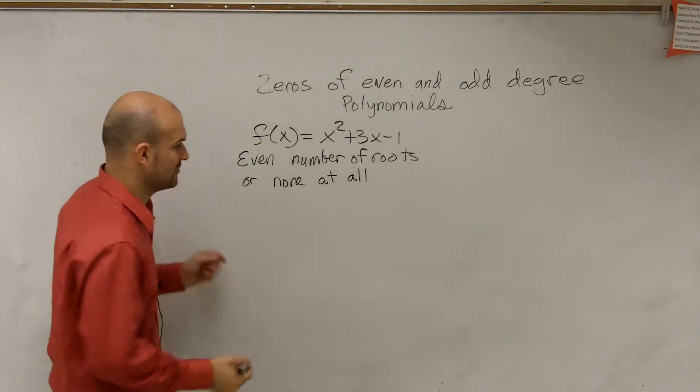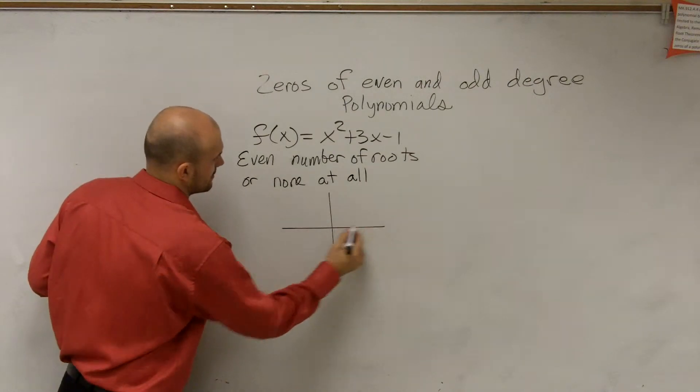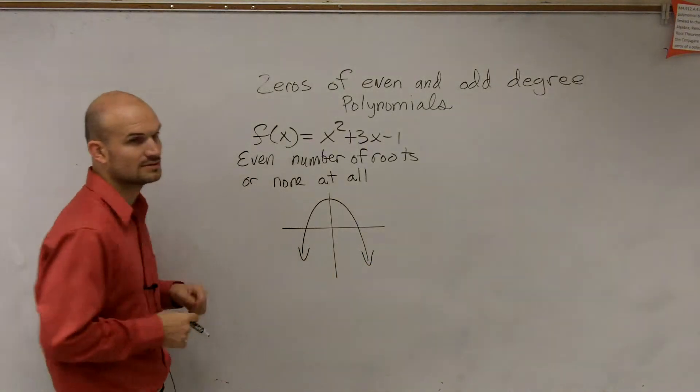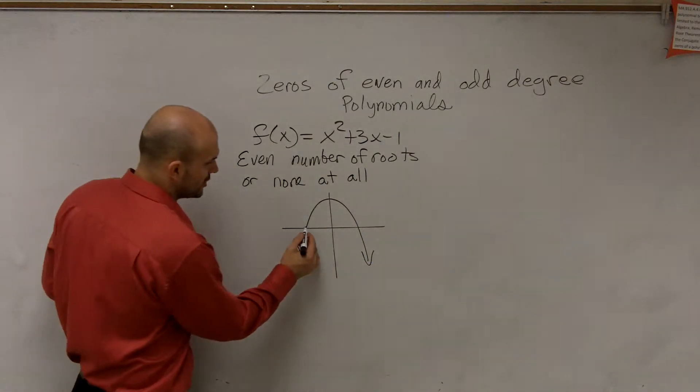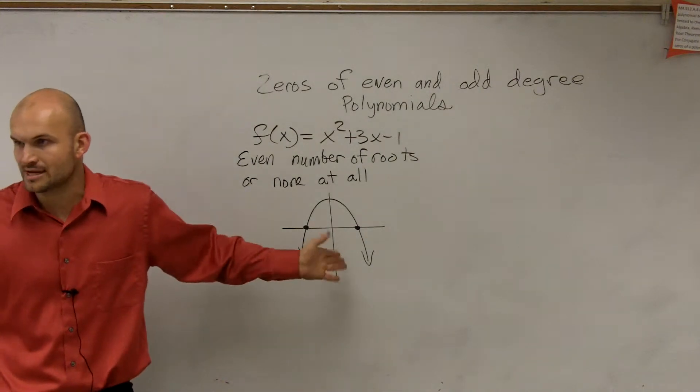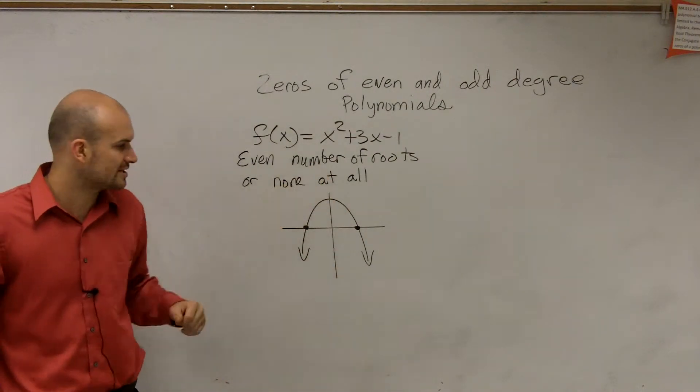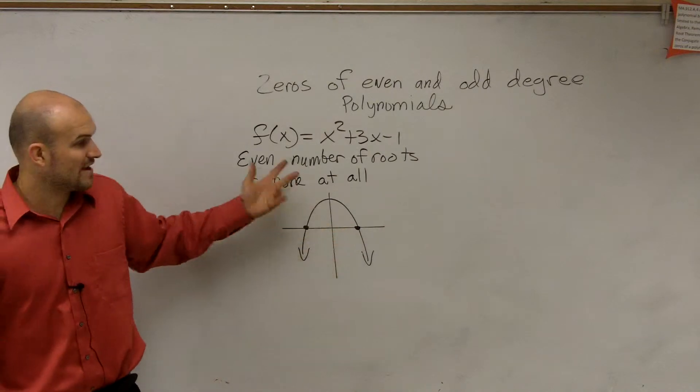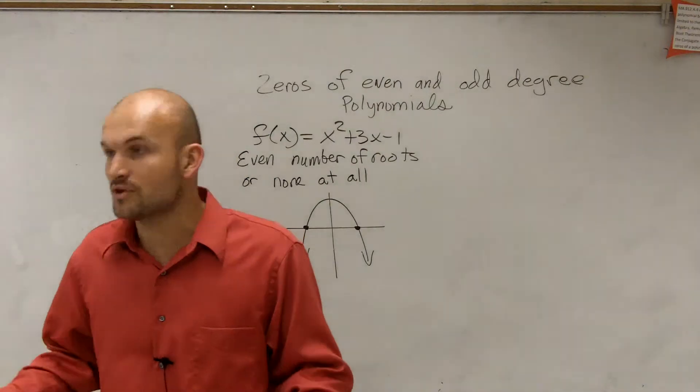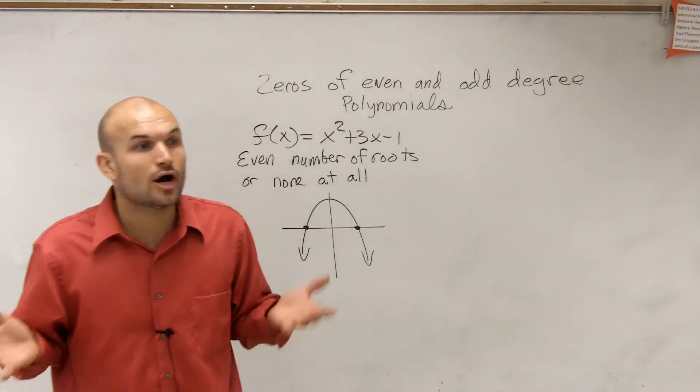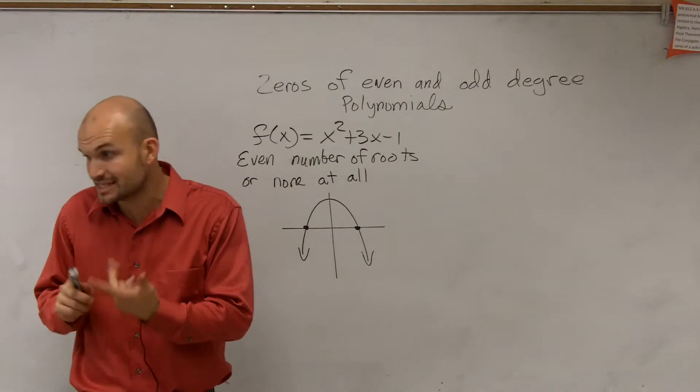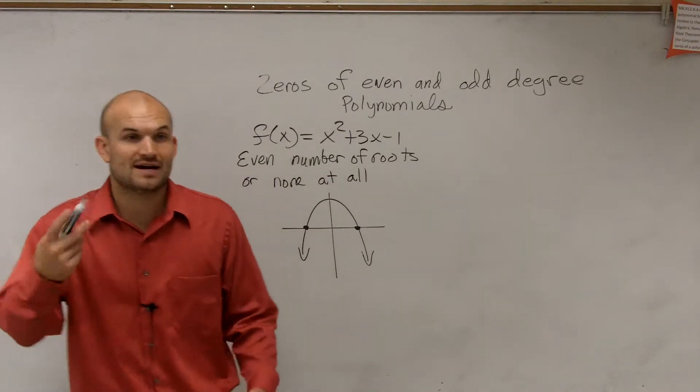And let's look at an example of that. Ladies and gentlemen, here's an equation. Is that a quadratic? Yes. And you can notice that that has two solutions to it, right? Two x-intercepts, two roots, zeros, whatever we're dealing with. So that is an example of having two, right? And guess what? If I have something to the fourth power, you can have up to four zeros.